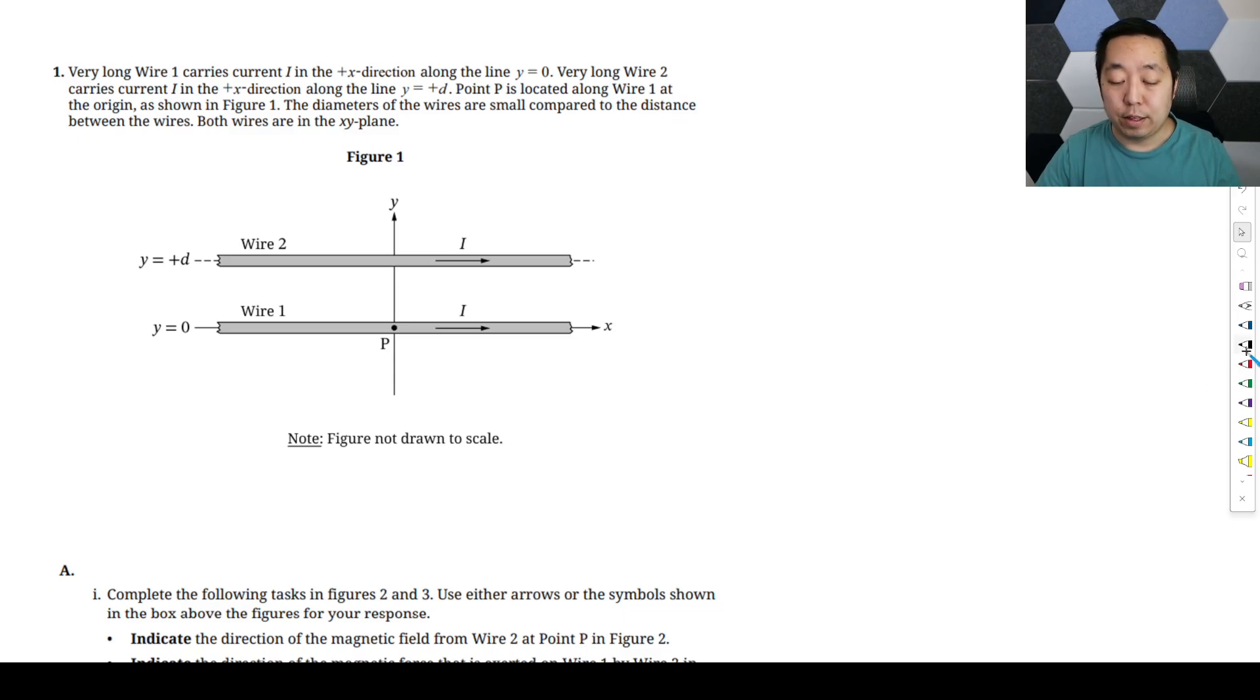Alright, so we're looking at the first FRQ in the 2025 AP Physics 2 exam. We have a very long wire 1 carrying current I in the plus X direction along the line Y equals 0, and wire 2 carries current I in the plus X direction along the line Y equals positive D. Point P is located along wire 1 at the origin. The diameters of the wires are small compared to the distance between the wires, and both wires are in the XY plane.